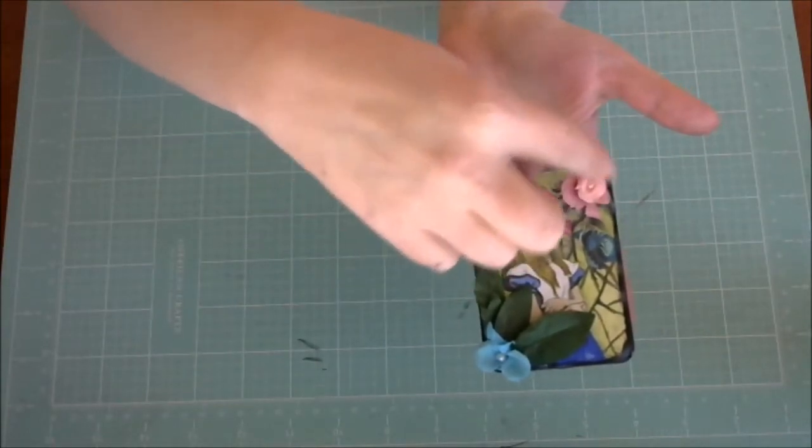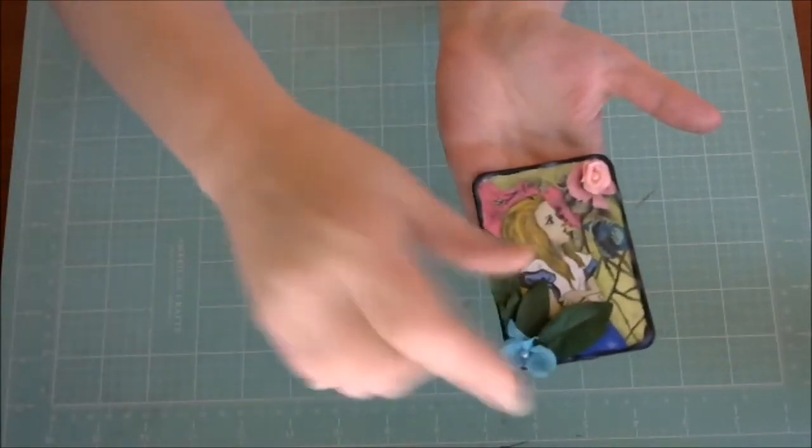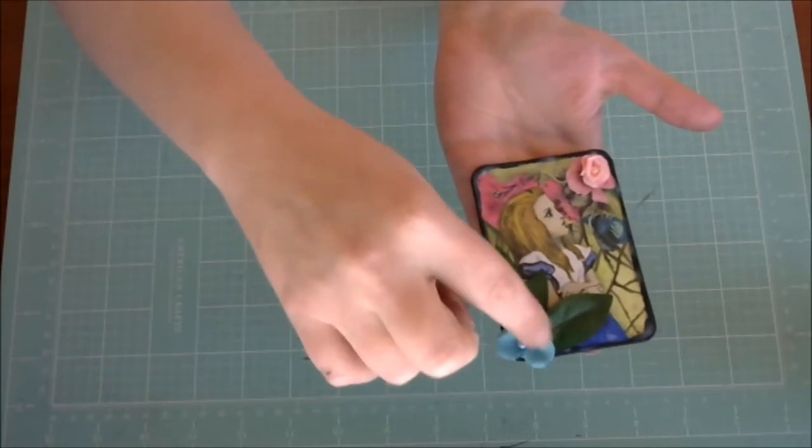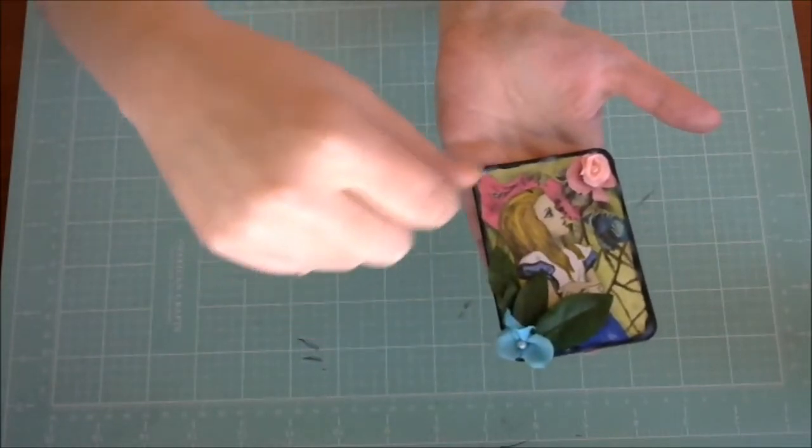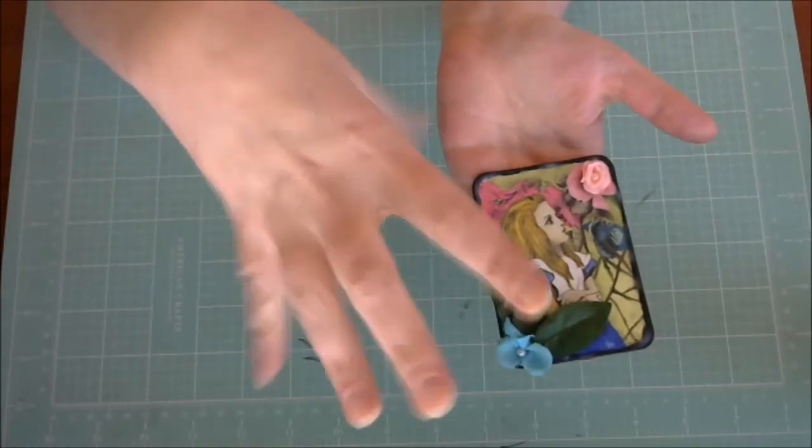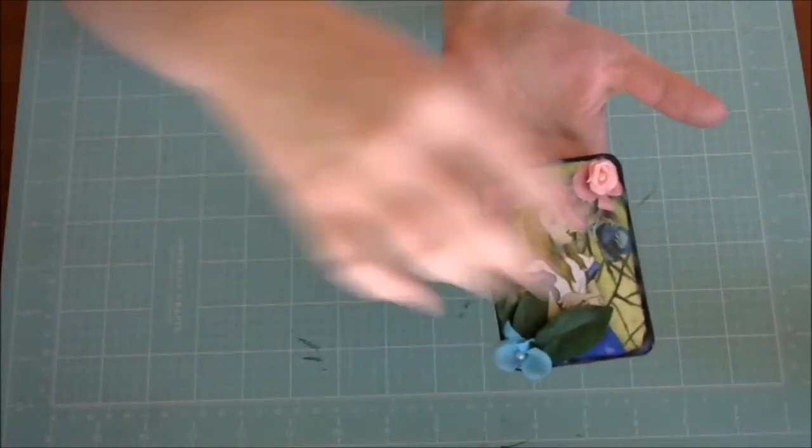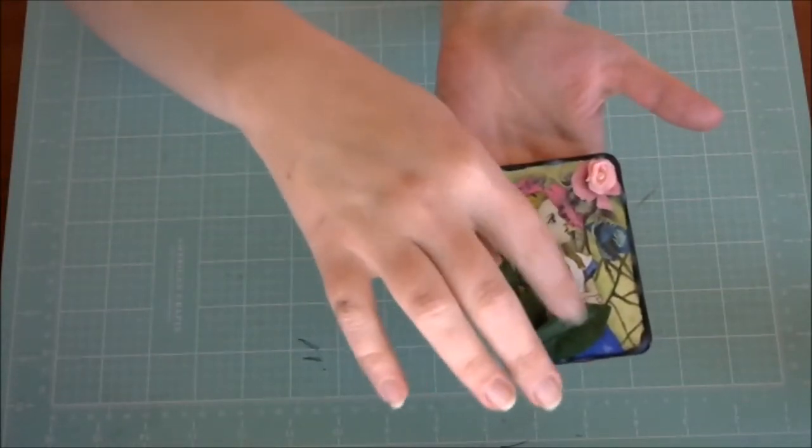And then I took some little fake flowers, little silk flowers, and just cut them down a little bit, made them a little bit smaller, and stuck them on there just to give a little bit more dimension. And then I put some little leaves on here.